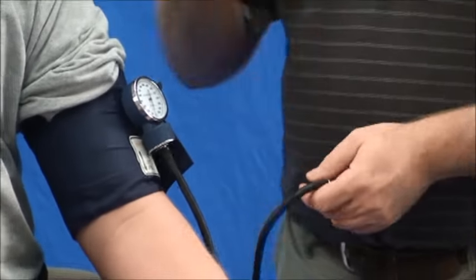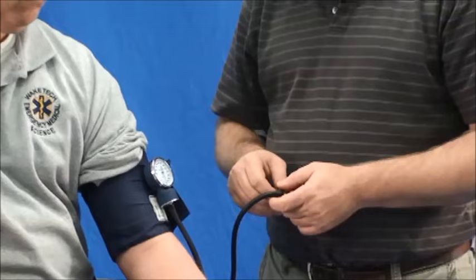This is only going to give me the top number or the systolic. And the way you'll represent this on your documentation is to put whatever number the systolic is. We'll say 120 over a P to indicate this is by palpation.